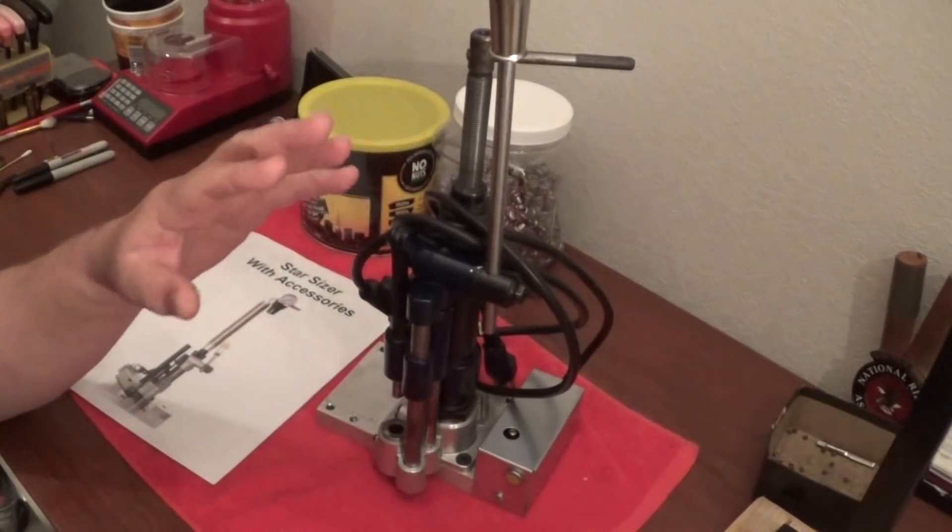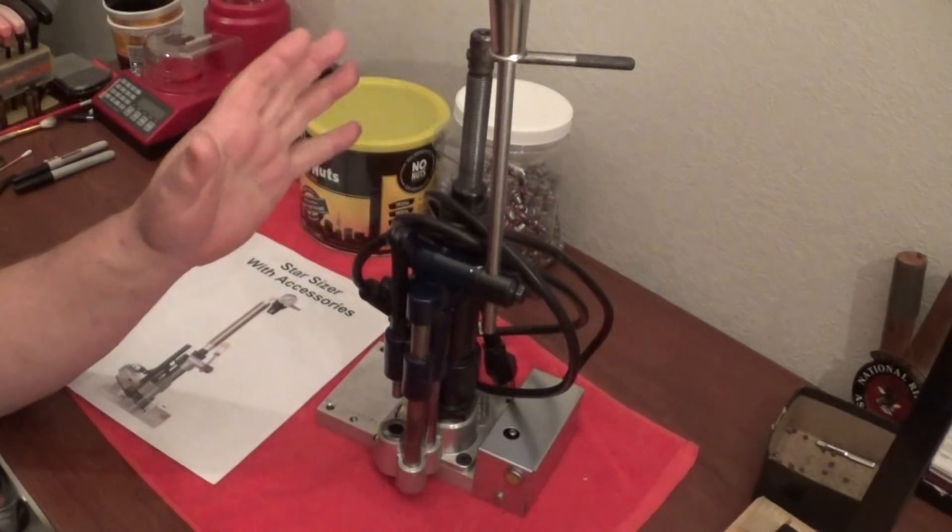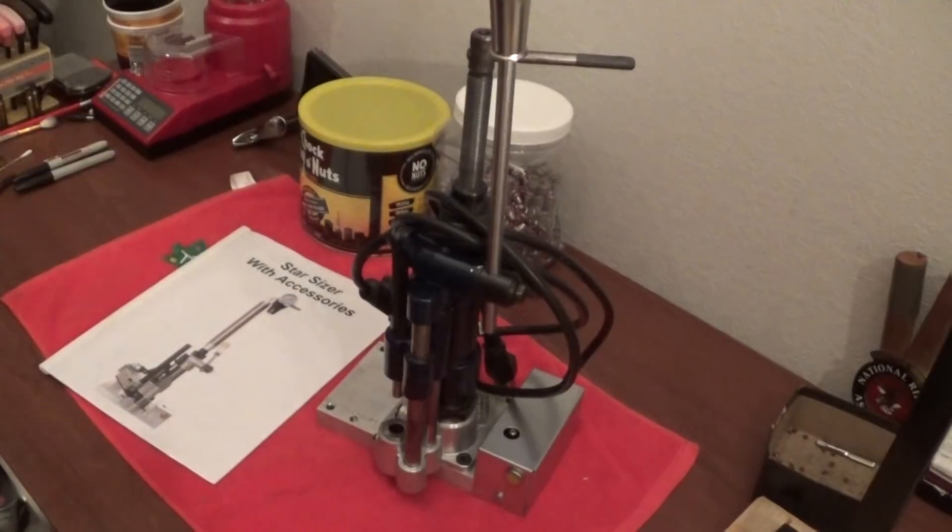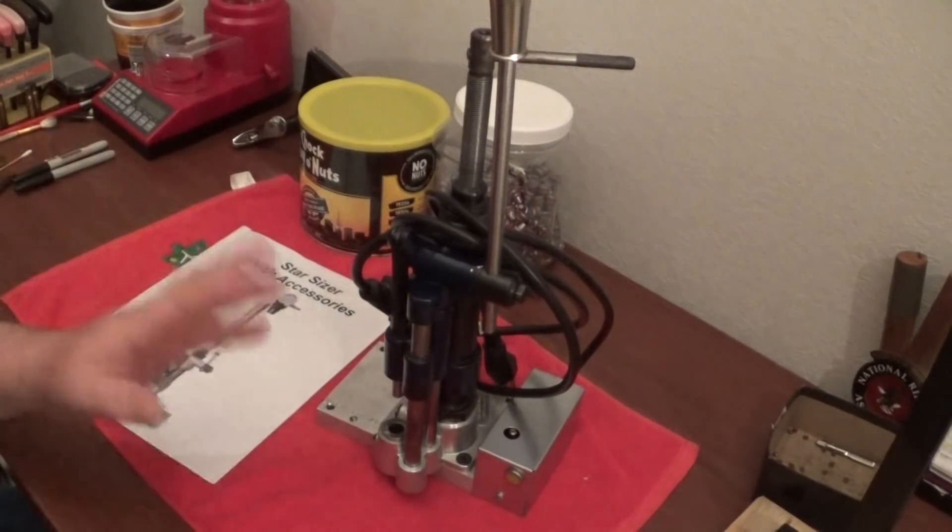If you were to buy a brand new Star unit you're probably looking at $350. So for both of them I ended up forking out 400 bucks, so that was no big deal. I think I got a great deal on it and it's just gonna expand my bullet making capability.